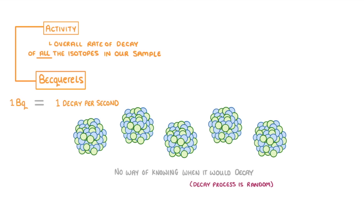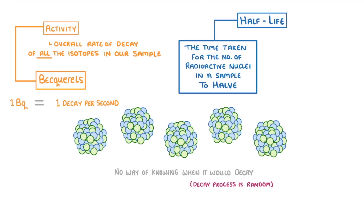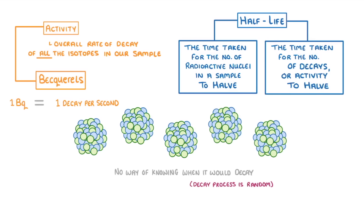The other important term to know is half-life, which has two definitions. It can be defined either as the time taken for the number of radioactive nuclei in a sample to halve — for example to drop from a million unstable nuclei to only 500,000 — or the time taken for the activity to halve, for example to drop from 600 decays per second to 300 decays per second.